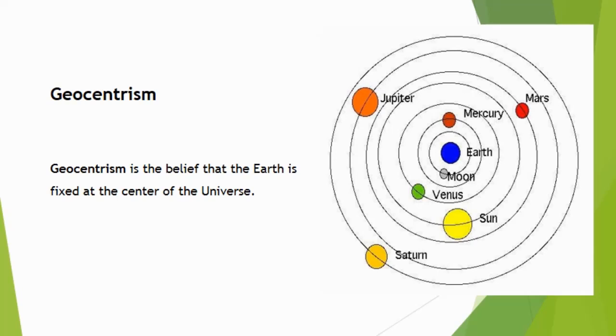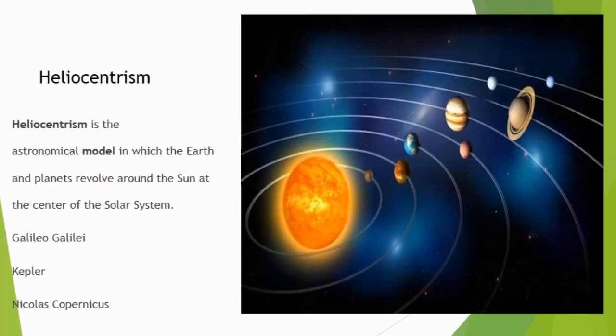In past times, before the invention of telescope by Galileo Galilei, it was thought that Earth is the center of solar system and all the planets revolve around the Earth in specific orbits. This concept was known as geocentrism. But after invention of telescope and theories given by Kepler,